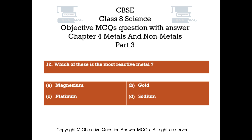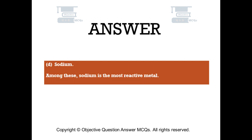Question number 12. Which of these is the most reactive metal? Option A: magnesium. Option B: gold. Option C: platinum. Option D: sodium. The right answer is option D. Sodium. Among these, sodium is the most reactive metal.